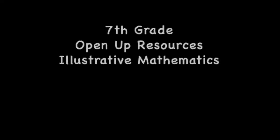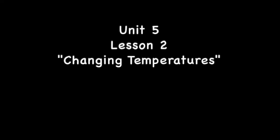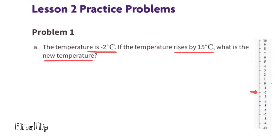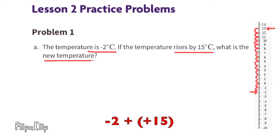Seventh grade Open Up Resources Illustrative Mathematics, Unit 5, Lesson 2, changing temperatures. Problem 1a: the temperature is negative 2 degrees Celsius. If the temperature rises by 15 degrees Celsius, what is the new temperature? Since 'rises' means increasing, we can look at this as negative 2 plus positive 15.